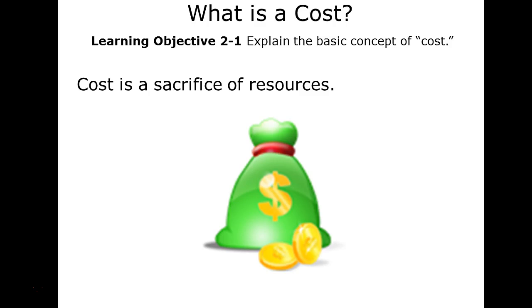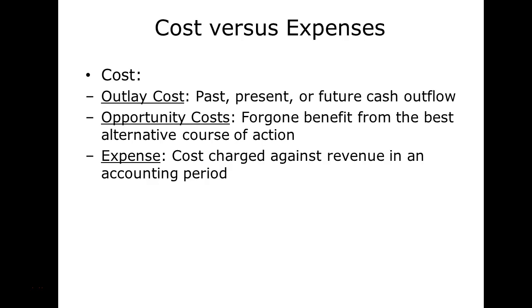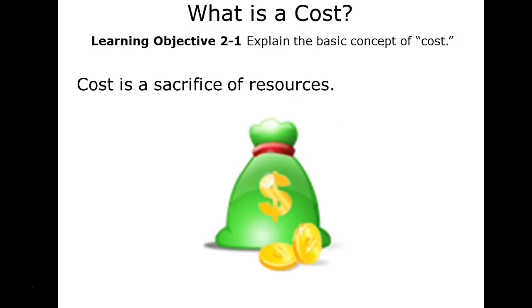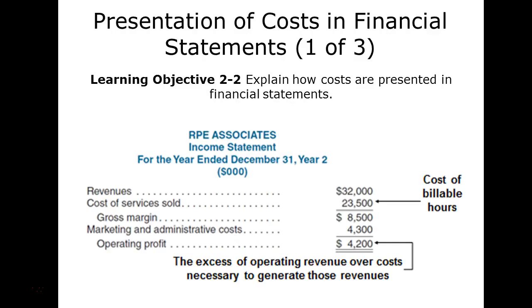We also want to understand the distinction between financial and contribution margin income statements. Cost is a sacrifice of resources — something you have to give up. Cost versus expenses: expenses is the matching of what you pay against the revenue it generates in a specific accounting period. In our discussion, we're talking about cost in terms of outlay of money, present and future outflow, and also the foregone costs or benefits you would have received if you did something else.